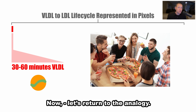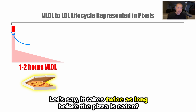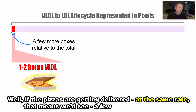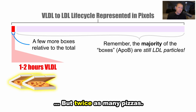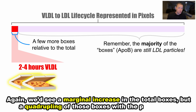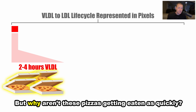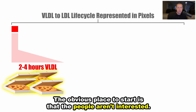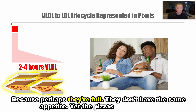Now let's return to the analogy. If VLDLs are like pizza boxes with pizzas inside, what does it mean when those pizzas remain inside for longer? Let's say it takes twice as long before the pizza is eaten — if the pizzas are getting delivered at the same rate, we'd see a few more pizza boxes but twice as many pizzas. What if it took four times as long? We'd see a marginal increase in total boxes, but a quadrupling of those boxes with pizza inside. But why aren't these pizzas getting eaten as quickly? The obvious answer is that the people aren't interested — perhaps they're full, they don't have the same appetite, yet the pizzas keep coming.